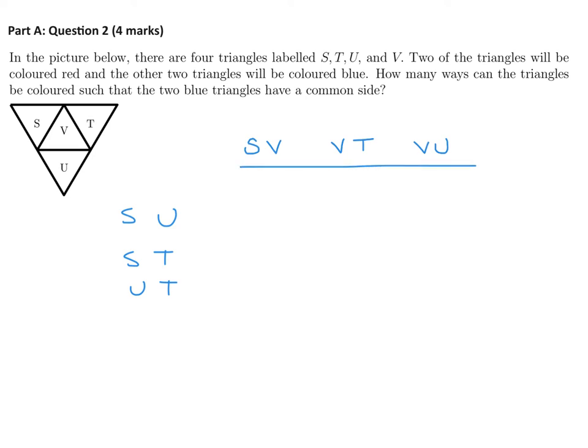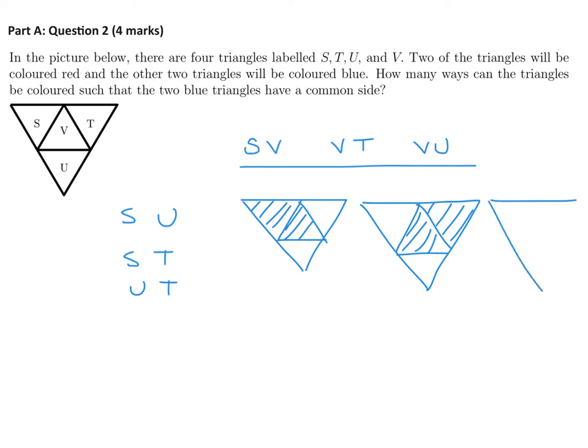So these are the only possibilities. So we've got a situation where S is here and V is here, so there's one. And then V, T is this is V and this is T. And then V, U is V and U. And then once those are colored blue, the other two triangles are colored red. Those are the only scenarios. So in how many ways? One, two, three ways is the answer to this question.